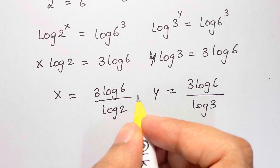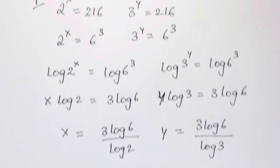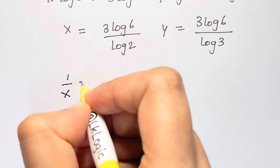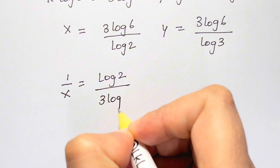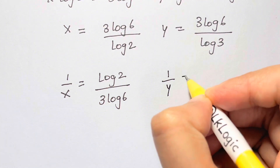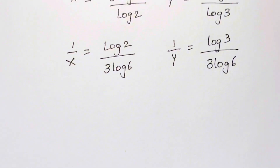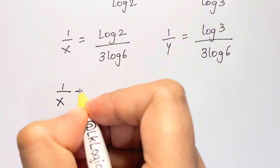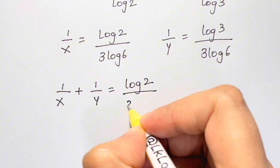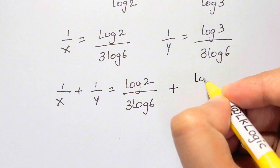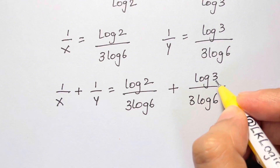We don't need the actual values of x and y — we just want 1 over x plus 1 over y. Taking the reciprocal of x, 1 over x equals log 2 over 3 log 6. And 1 over y equals log 3 over 3 log 6. Now adding them up: 1 over x plus 1 over y equals log 2 over 3 log 6 plus log 3 over 3 log 6.